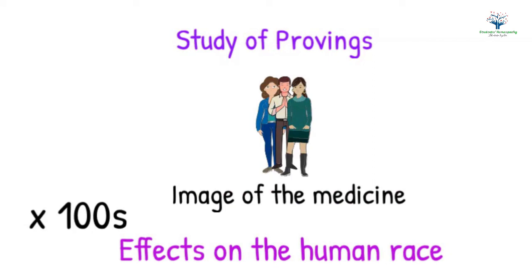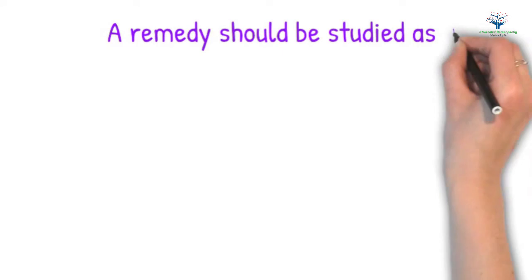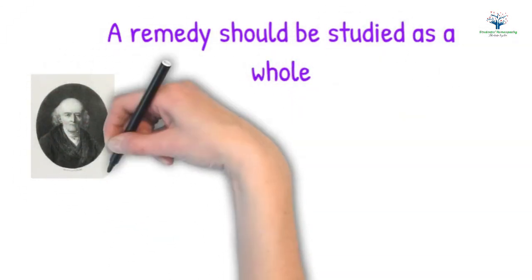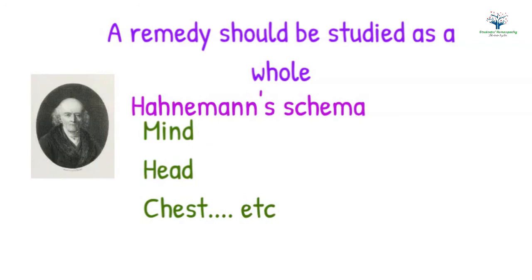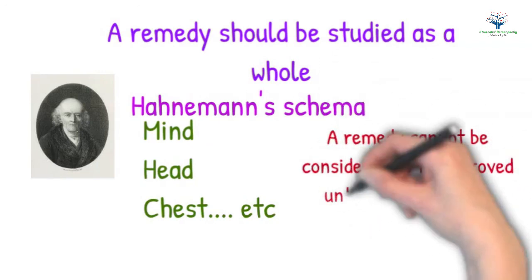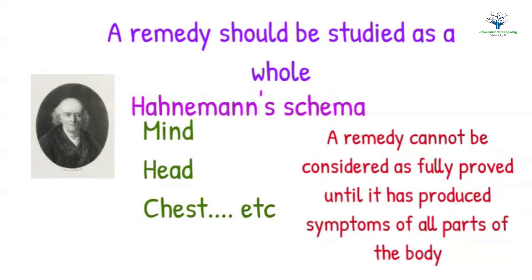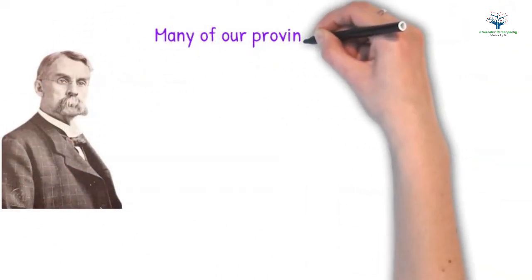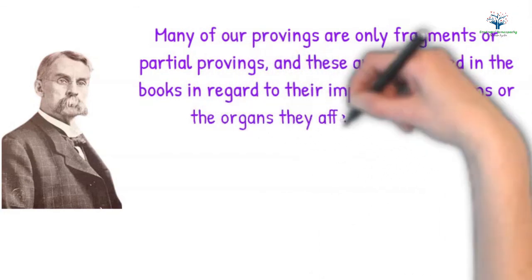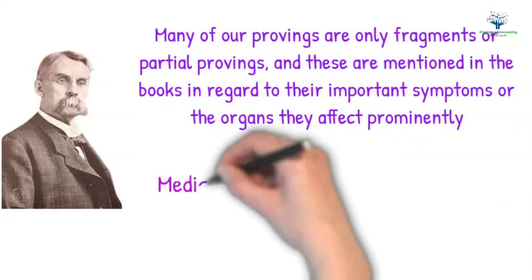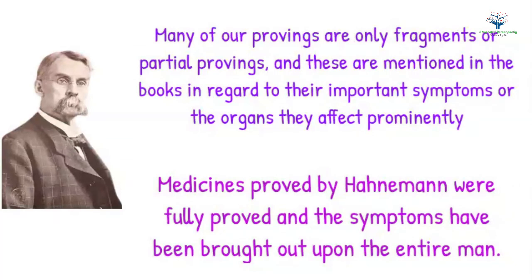The nature of a remedy should be studied in a similar manner to studying the nature of a disease. A remedy should be studied as a whole following Hahnemann's schema — under the headings of mind, head, chest, and so on throughout the entire body. A remedy cannot be considered fully proved until it has produced symptoms in all parts of the body. Kent tells that many of our provings are only fragments or partial provings. The medicines proved by Hahnemann were fully proved and the symptoms were brought out upon the entire man.